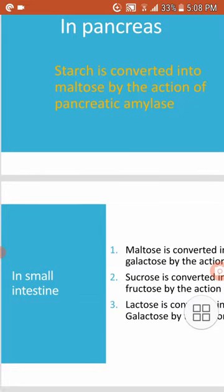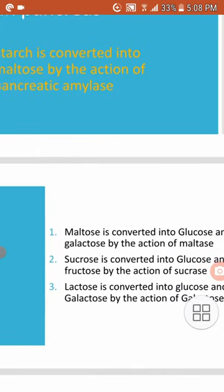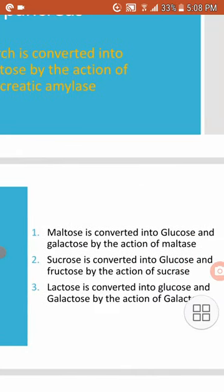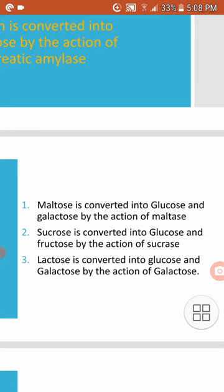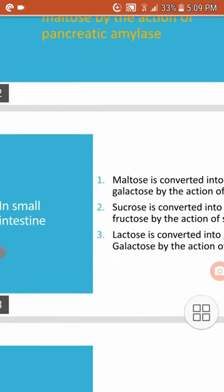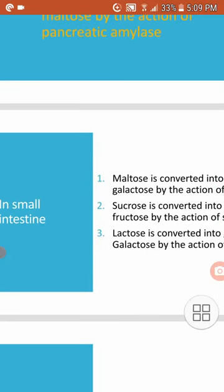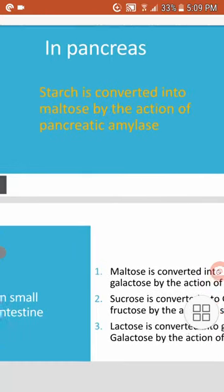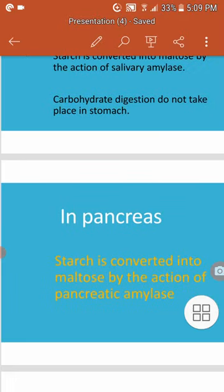In the small intestine, maltose is converted into glucose and galactose by the action of maltase. Similarly, sucrose is converted into glucose and fructose by the action of sucrase. Lactose is converted into glucose and galactose by the action of galactase. So most carbohydrate digestion takes place in the small intestine, and there is no carbohydrate digestion in the stomach.